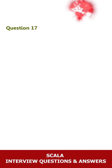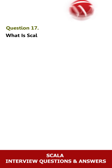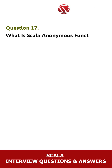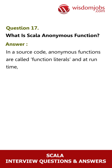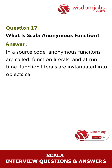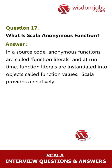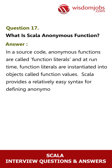Question 17: What is a Scala anonymous function? Answer: In source code, anonymous functions are called function literals, and at runtime, function literals are instantiated into objects called function values. Scala provides a relatively easy syntax for defining anonymous functions.